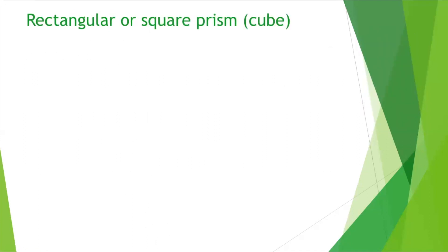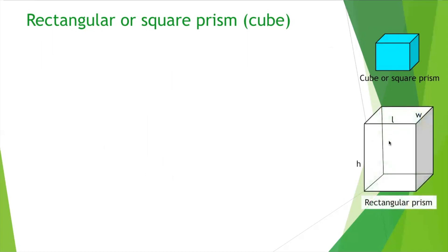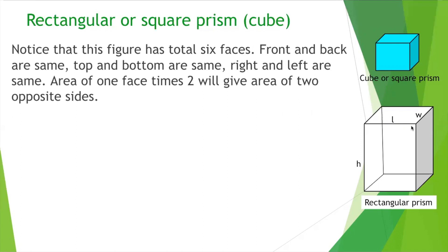Rectangular or square prism — a prism looks like a cube. It is called a square prism when all sides are squares, and a rectangular prism when the sides are rectangles. A prism is like a book, a brick, or a box. These boxes have a total of 6 faces: top and bottom, right and left, and back and front.